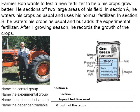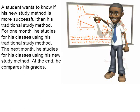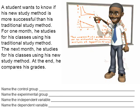Here's one last example. A young student wants to know if his new study method is more successful than the traditional study method he's been using for years. For one month he studies using his traditional method, and the next month he studies using a new method. At the end of both periods, he compares the grades he earned in school. Pause the video and try to answer the four questions.